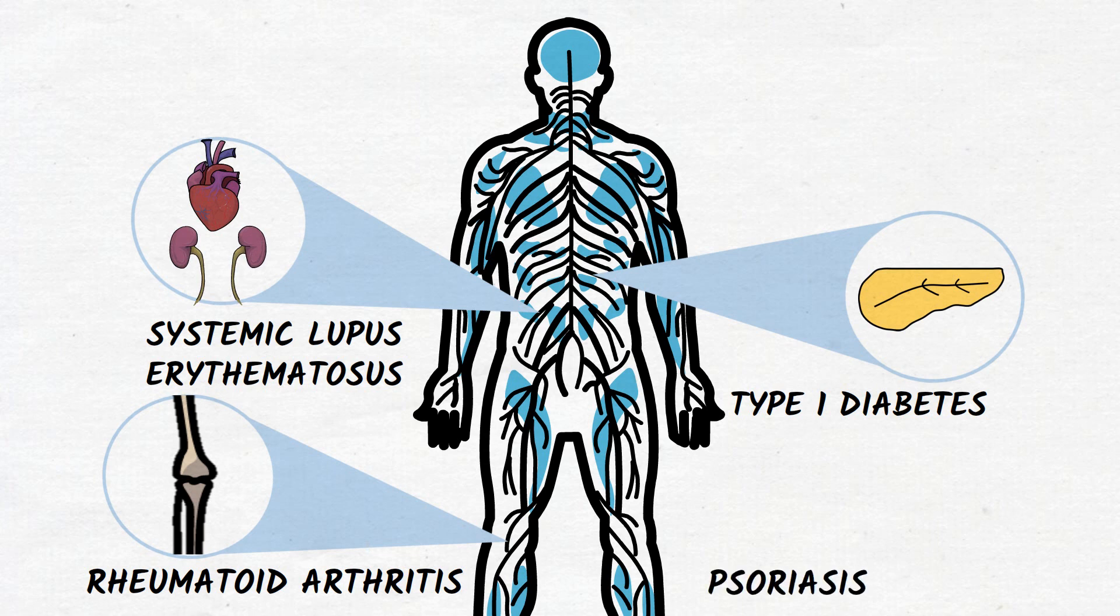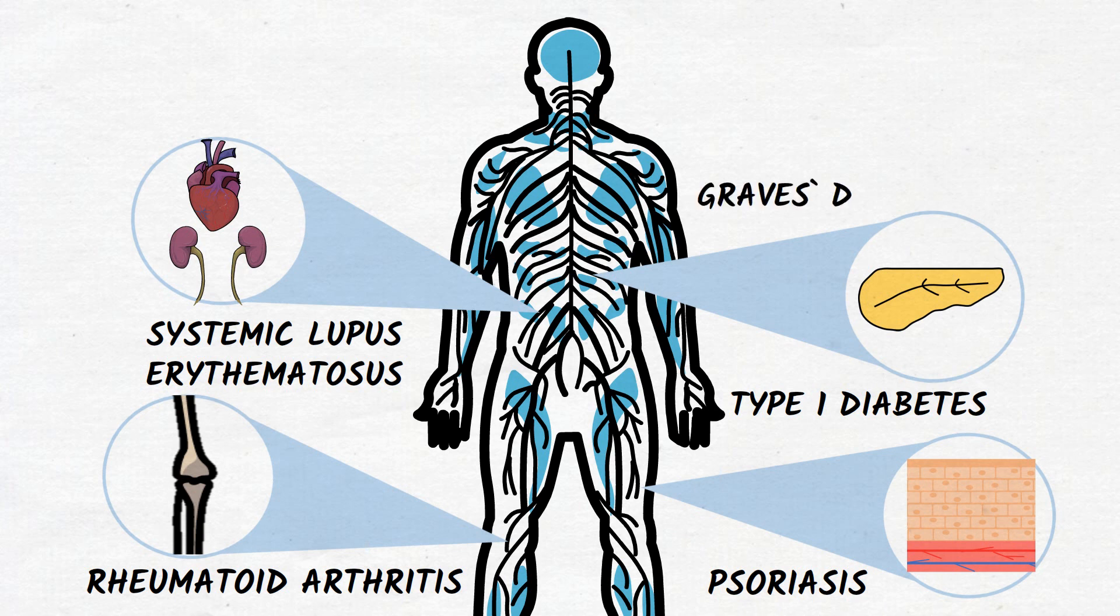Psoriasis, which causes skin cells to multiply too quickly and the extra cells build up and form inflamed red patches. Graves' disease, in which autoantibodies attack the thyroid gland, causing it to produce too much thyroid hormones.